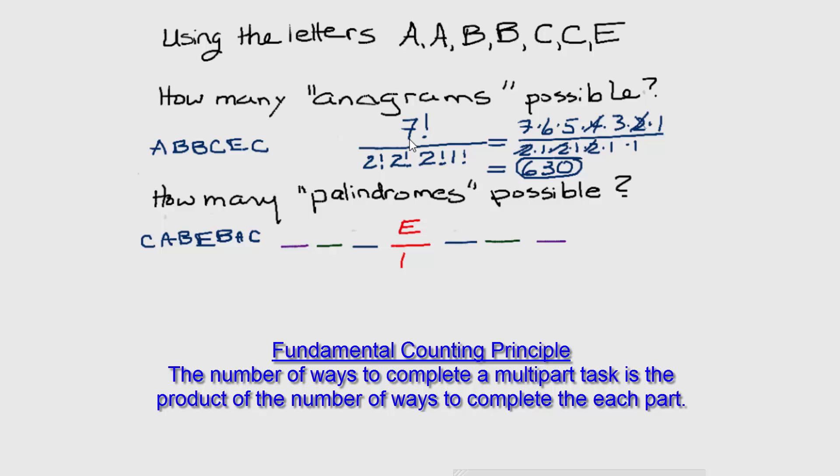So let's choose that one first. That's going to be our first part of our task, choosing the letter E, and there's only one way that that can happen. That's the first factor in our product.